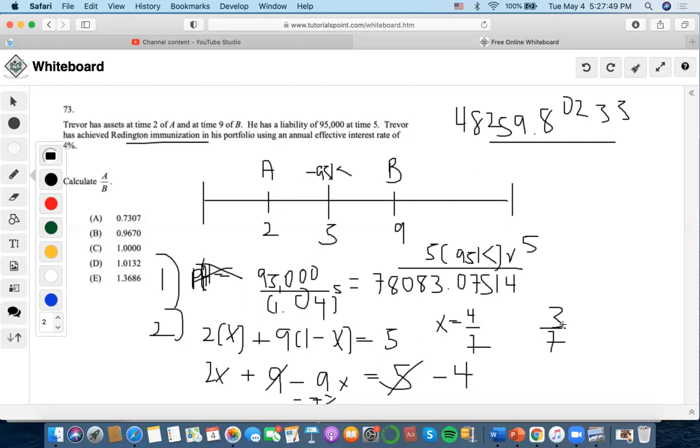And then the next part is 3 sevenths of the present value. Because remember the present value of the assets always have to equal the present value of the liability. So times 3 sevenths, 78,083.0754, accumulated to time 9, times 1.04 to the 9. 47,629.955.